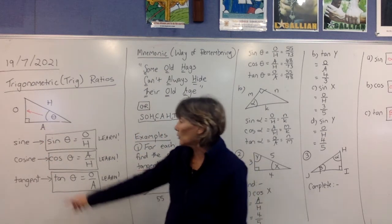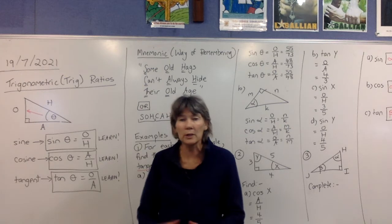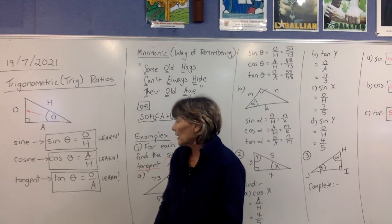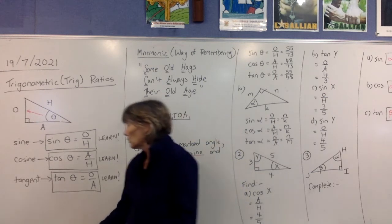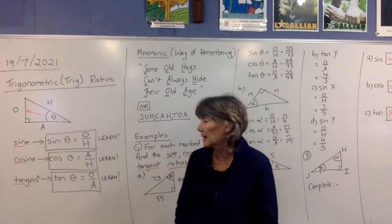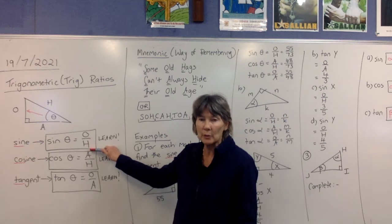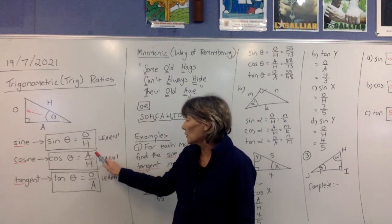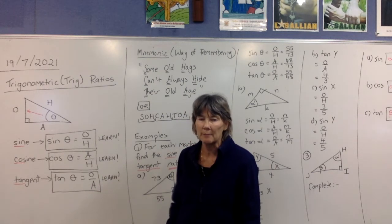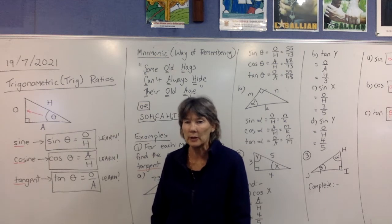So the trig ratios are called sine, cosine, and tangent. They are ratios, and sometimes ratios can be written as fractions — that's how we're going to be writing them. The abbreviations are just the first three letters of each word, so we call them sin, cos, and tan. Sine theta is opposite over hypotenuse. Cos theta is adjacent over hypotenuse, and tan theta is opposite over adjacent. You need to know those three ratios off by heart — you're going to be using them a lot.